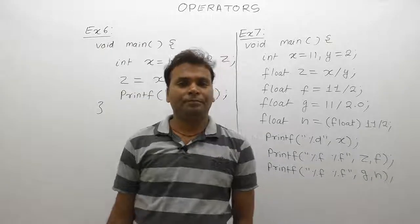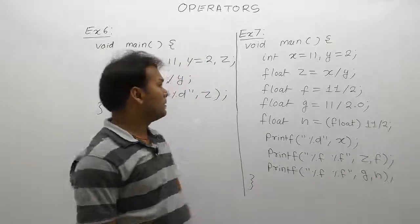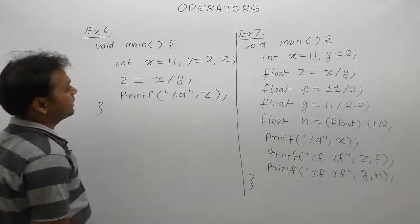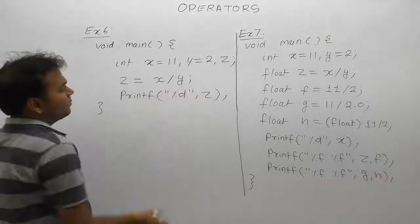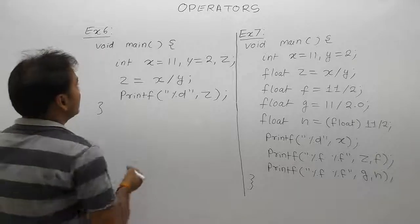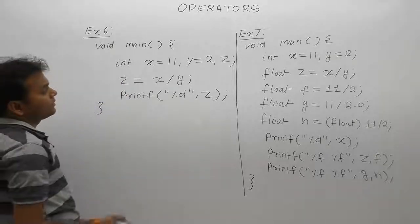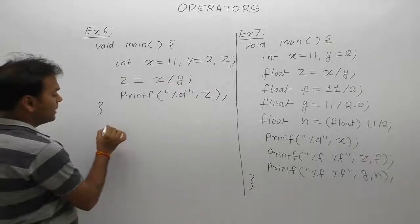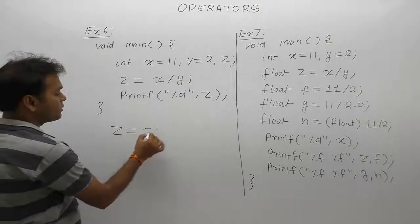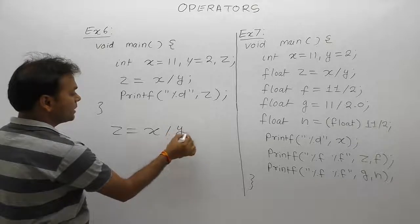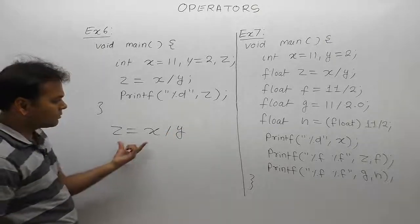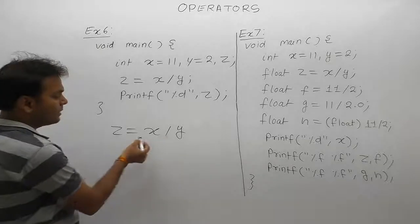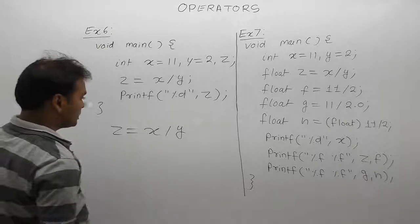More examples about arithmetic operations, specifically division operations. What is the result of example 6? Here, x and y are both integer types. The expression is z equals to x divided by y. To solve this, check the total number of operators. There are two operators: division and assignment.